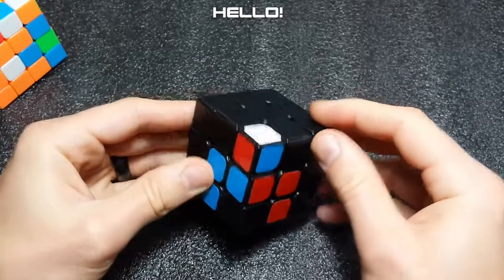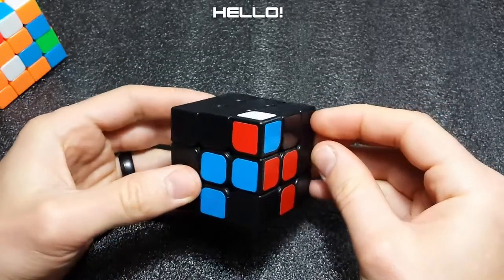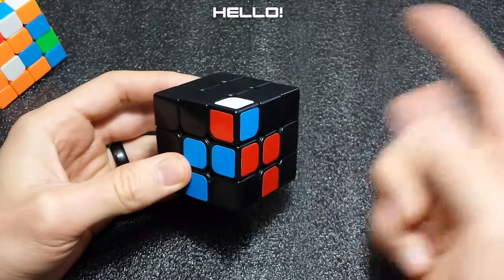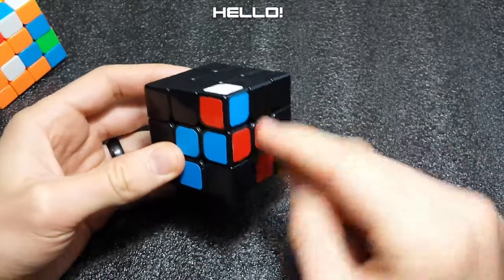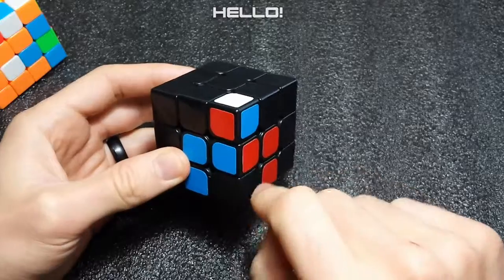Hello everyone. In today's video we'll be covering case number 32 from the speed solving wiki, and it's easy to recognize because you have basically a pair but your edges flipped incorrectly.